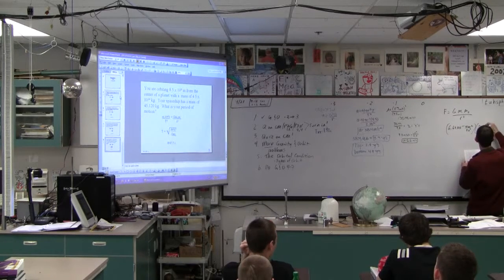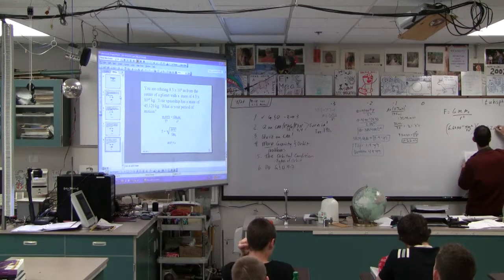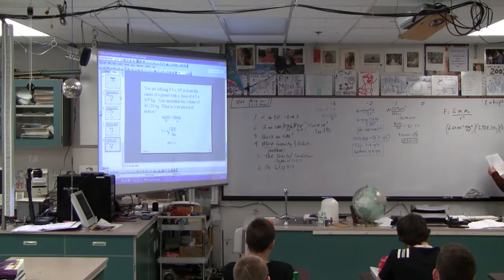The mass of the earth is 5.97, I do think I gave that to you, E24 kilograms. The mass of the moon is 7.36 times 10 to the 22nd kilograms.